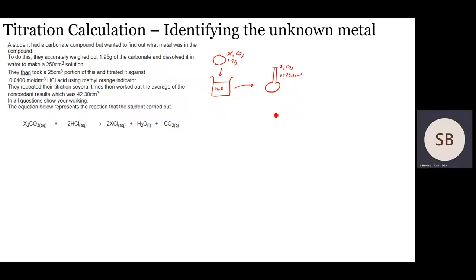Then we took out 25 centimetre cubed portions of it. When you pipet that out you always put it into the conical flask. So the conical flask is what contains the X2CO3. This time our volume is just 25 centimetres cubed. And we titrated it. Whenever you're doing titration you're going to use a burette. This is why practical work is so important to make you think what's going on. That contains the HCl. We know the concentration of that is 0.04, and we know the volume is 24.3 centimetres cubed because that's what the concordant results are.